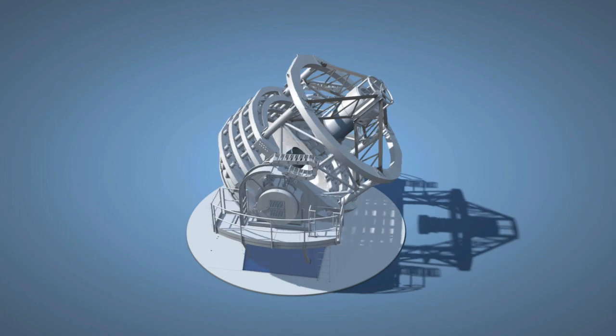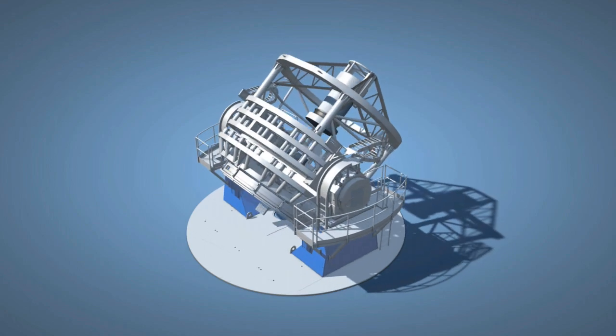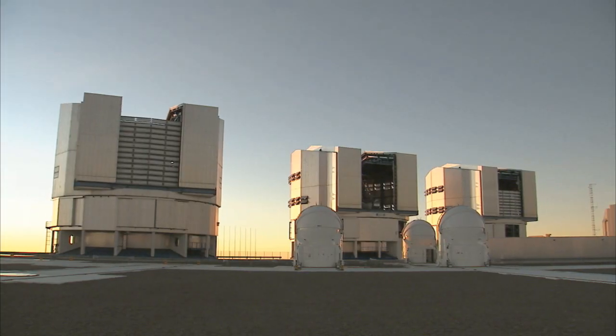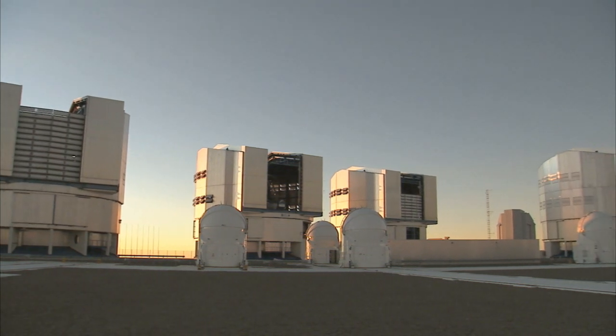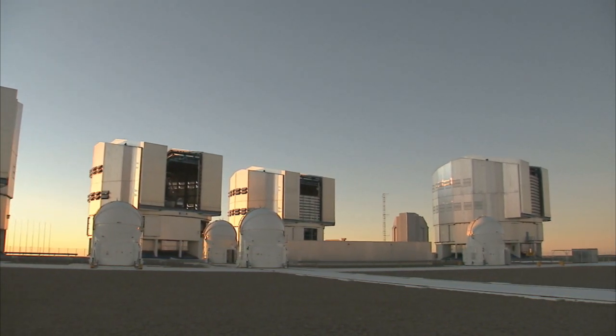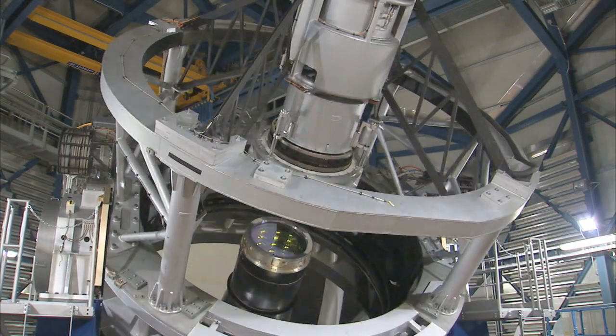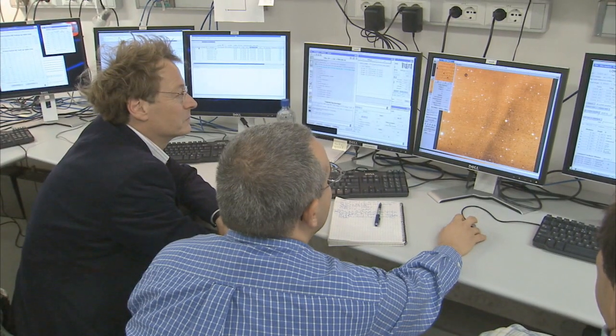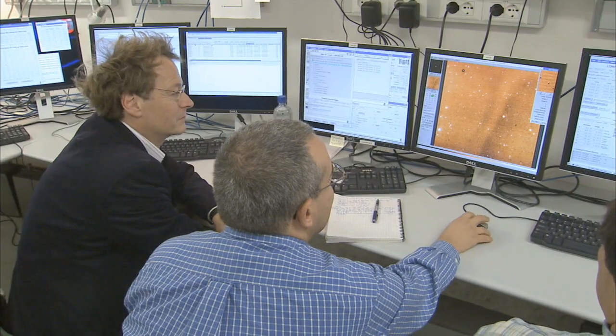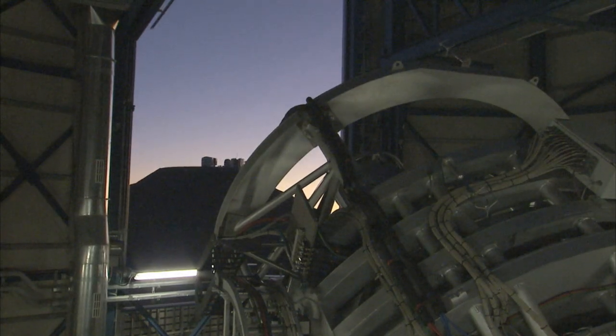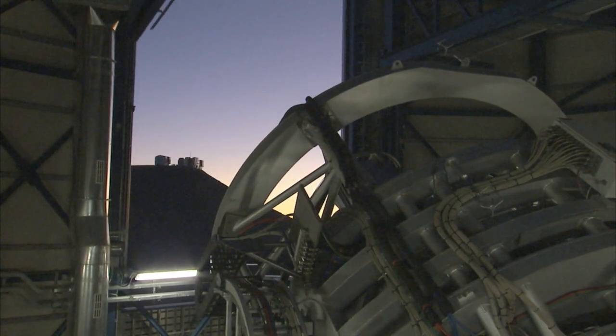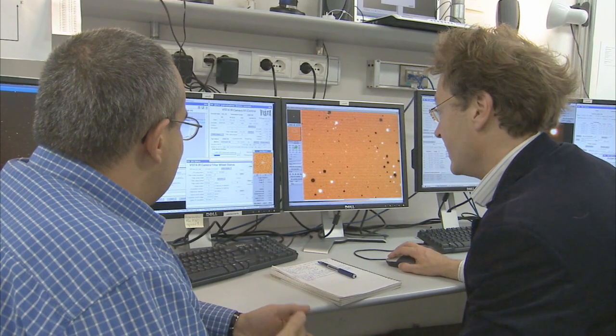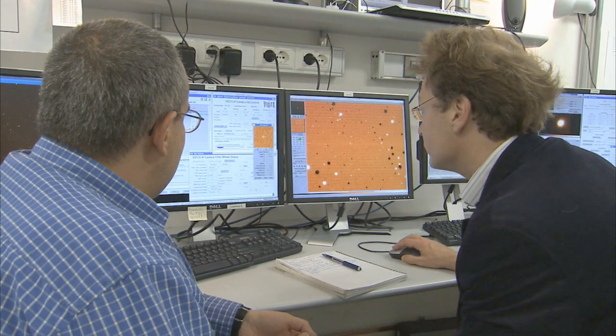Interesting things found by VISTA will form targets for detailed study both by the neighboring ESO telescopes, such as the four 8-meter VLT unit telescopes, and by other observatories on Earth and in space. VISTA will find the rare needles in the cosmic haystack, and then the VLT can study these needles in great detail, so astronomers can try to understand what they are and what's going on in the universe.